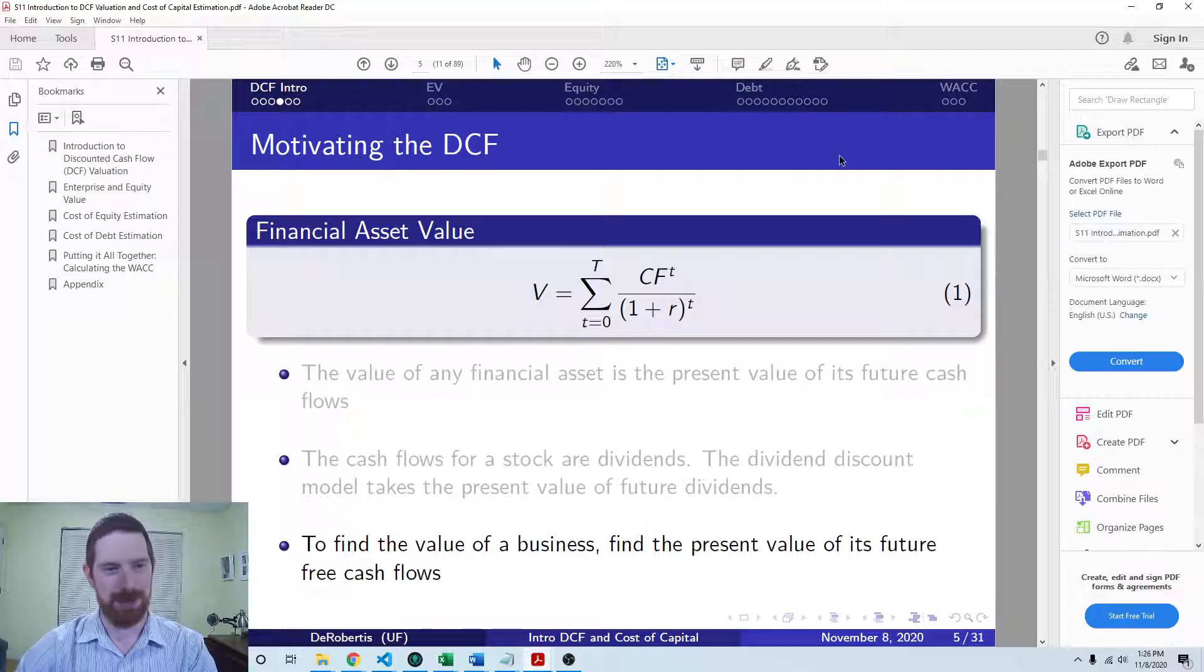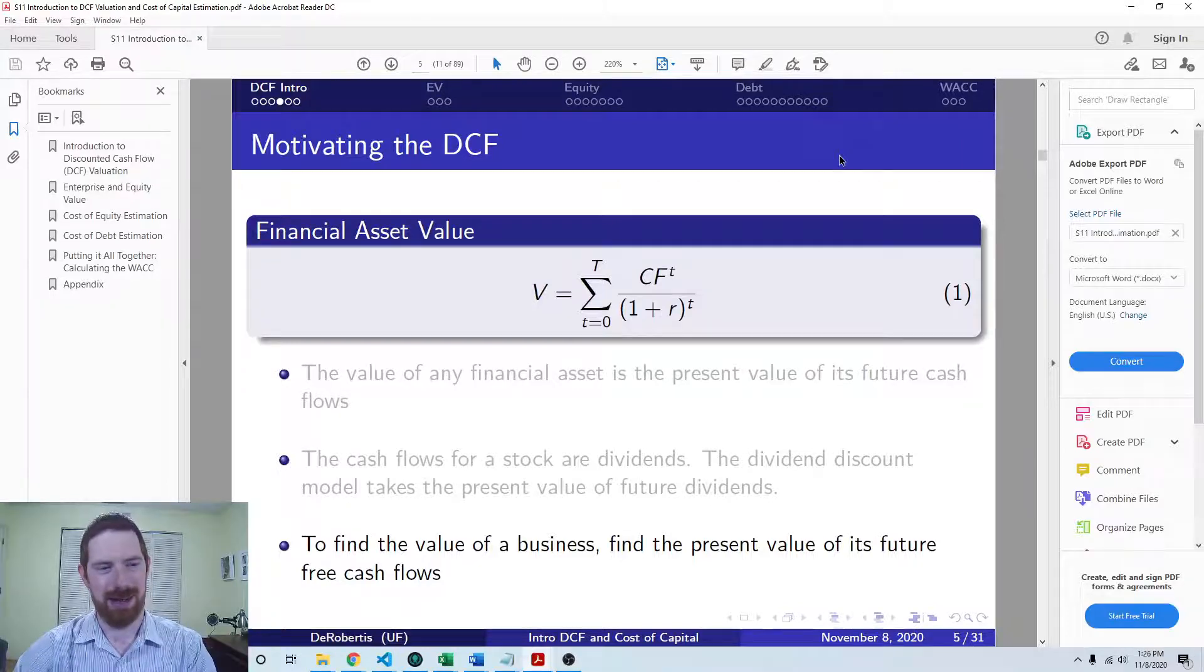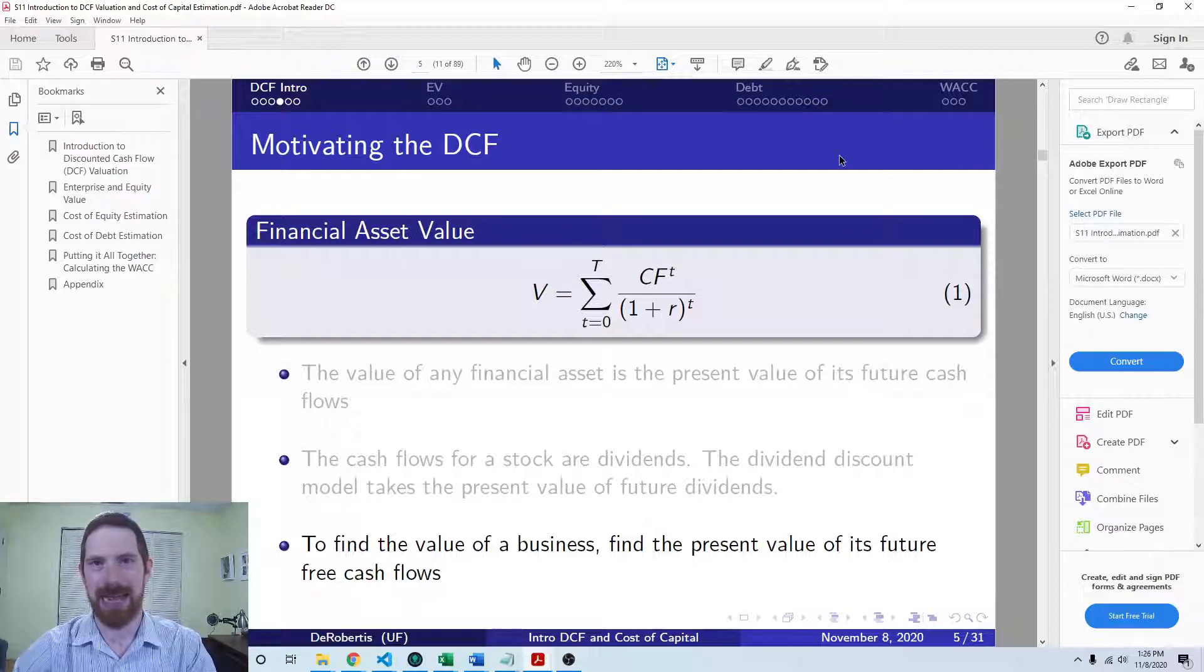Just with the DCF model, we're looking at the free cash flows of the company, which is representative of the company's operations. And so it's made off of the assets, debt plus equity. And so ultimately, we get the value of the entire business by doing this discounted cash flow approach. And then we back out the equity or stock value based upon that.